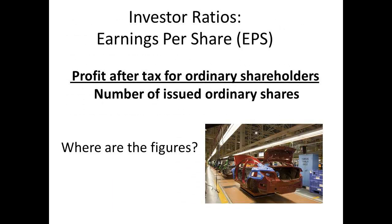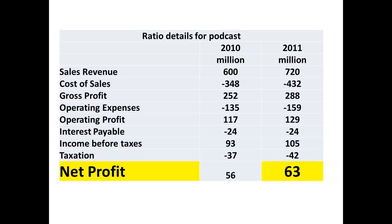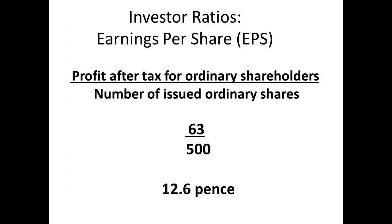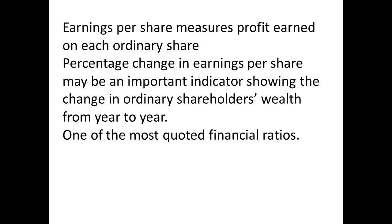The earnings per share, often called the EPS ratio, is determined by taking the profit after tax for ordinary shareholders and dividing by the number of issued ordinary shares. The net profit from the income statement is £63 million, and the number of ordinary shares from the balance sheet is 500 million. 63 divided by 500 gives a figure of 12.6 pence per share. The earnings per share is a measurement of the profit on each ordinary share, and a change in EPS is an indicator of the shareholder's wealth from year to year. This is commonly quoted as a financial ratio.